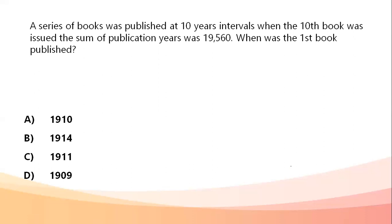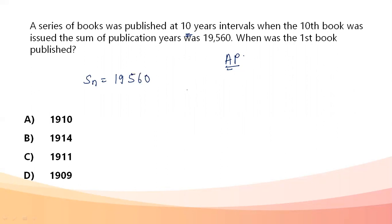Next question: a series of books were published at 10-year intervals. When the 10th book was issued, the sum of the publication years was 19,560. When was the first book published? Since the books are published at intervals of 10 years, they form an AP with common difference 10.